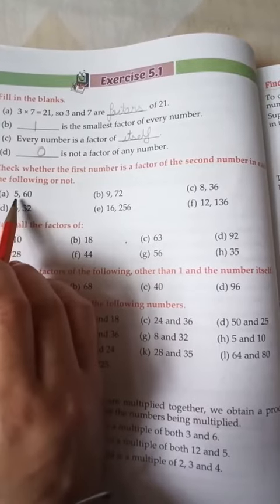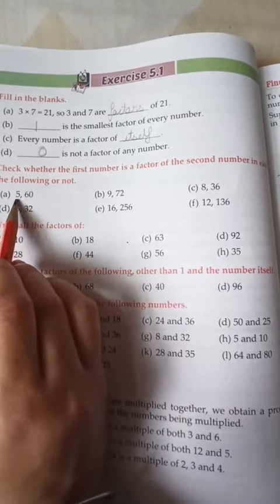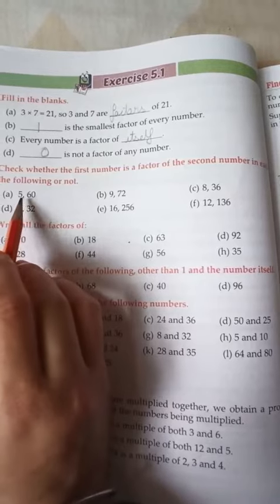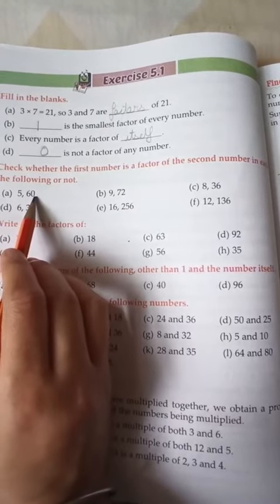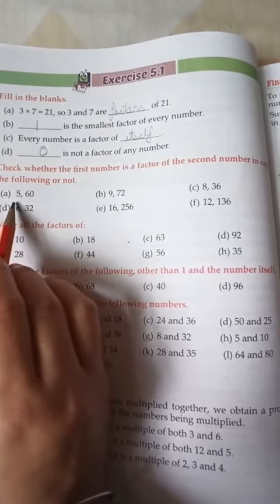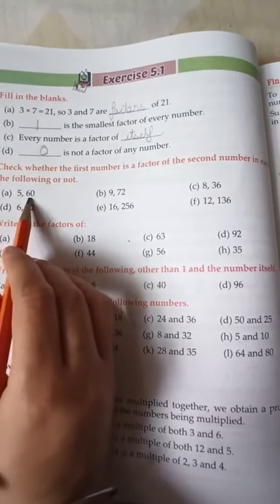In this question you have to do a simple thing: divide 60 by 5. If it is completely divided, then it will be the factor of 60. Okay, so I think 5 will completely divide 60, so this is the factor.